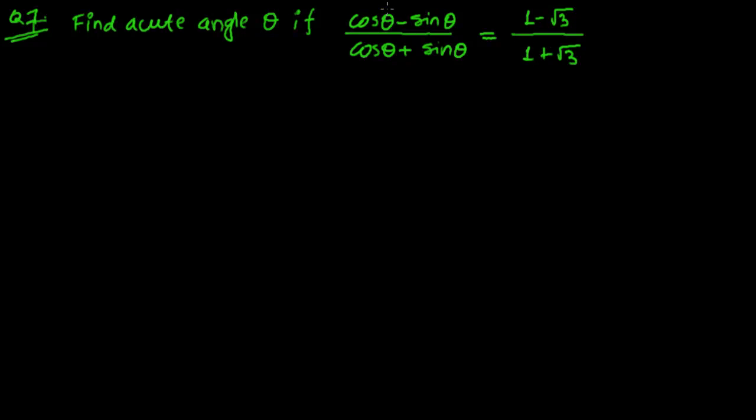Now we have to find out the value of this theta angle. So how to find out? Let me write first. Given: (cos θ - sin θ)/(cos θ + sin θ) = (1 - √3)/(1 + √3).